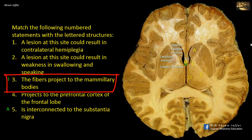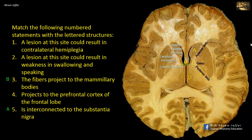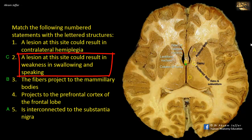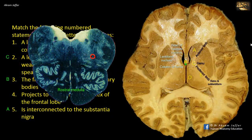C is the internal capsule, a massive bundle of projecting fibers that pass from one level of the central nervous system to a higher or lower level. The internal capsule consists of five components: anterior limb, genu, posterior limb, retrolentiform and sublentiform parts. C represents the genu — the bend — located at the medial tip of the lentiform nucleus at the intersection of the anterior and posterior limbs. The genu includes corticobulbar fibers from the cortex to the brainstem. A lesion here could result in weakness in swallowing and speaking due to denervation of the nucleus ambiguus, supplying muscles of the palate, pharynx, larynx, and upper esophagus.